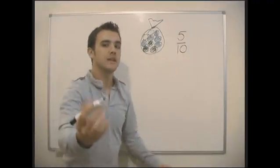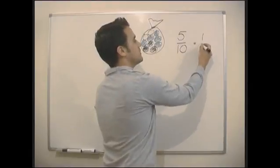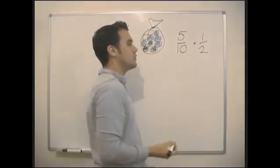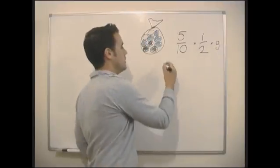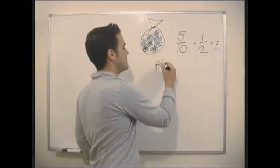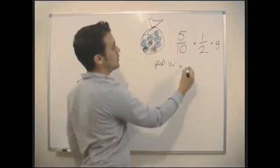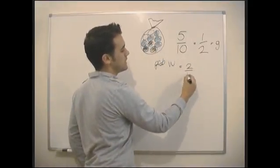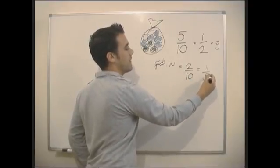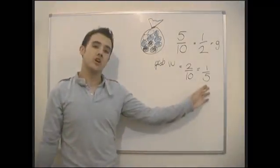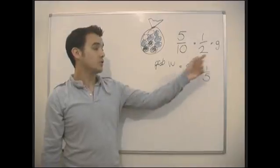So the probability of pulling a green ball is five in ten, which equals one in two. What about the probability of getting a white ball? In this case there's two white balls, so it's two in ten, which cancels down to one in five. So there's a one in five chance of pulling out a white ball and a one in two chance of pulling out a green ball.